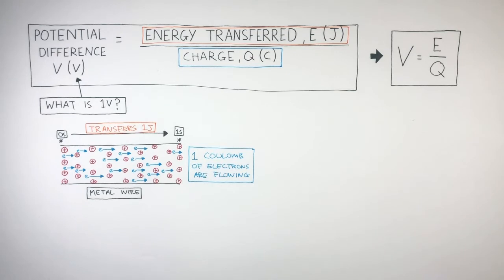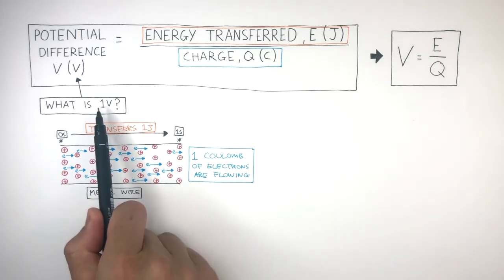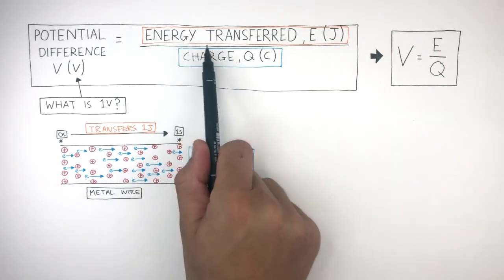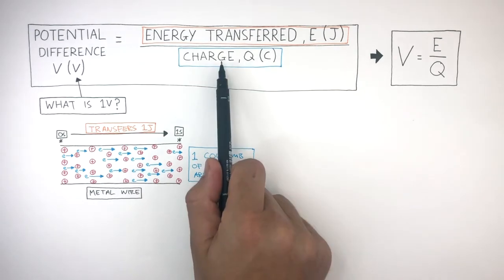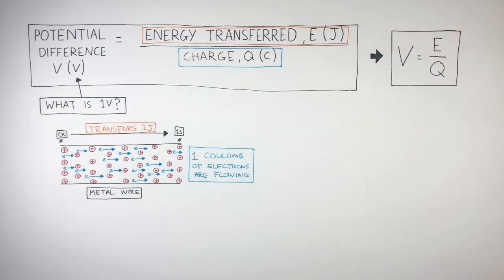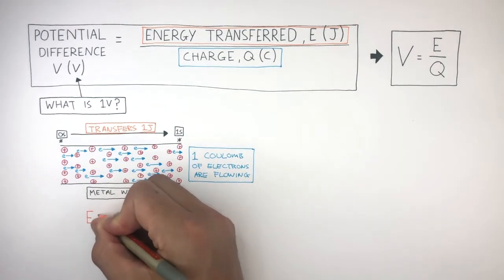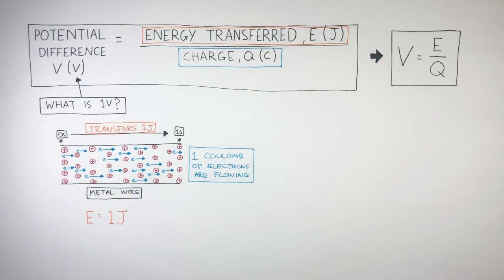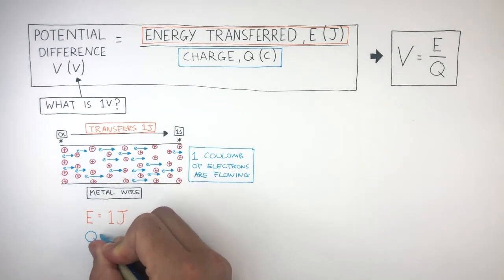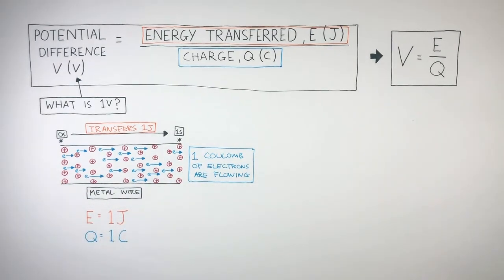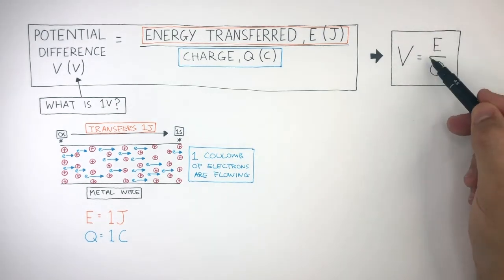Let's now use this information to figure out what is 1 volt. We use the equation to do this, where potential difference equals energy transferred divided by charge. We know from the information that E equals 1 joule and Q equals 1 coulomb. The equation is V equals E over Q.